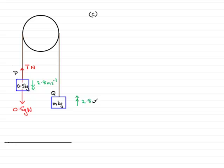So what I'm going to do is mark in the acceleration of m, that's going to be upwards and that will be 2.8 meters per second per second. We need to mark on the forces acting on m, so that will be the weight downwards, so that will be mg newtons.